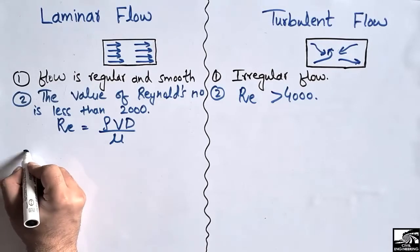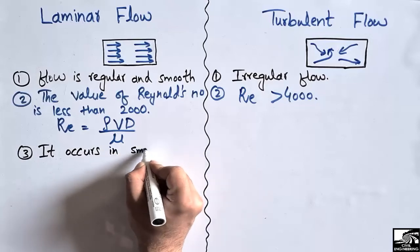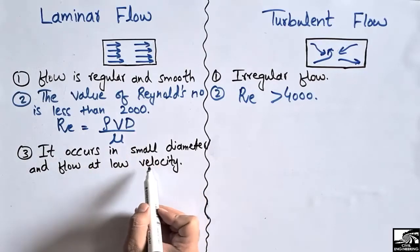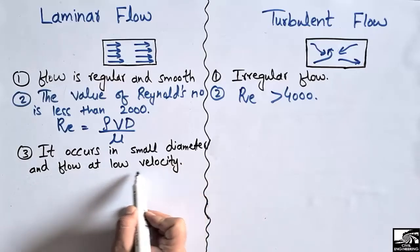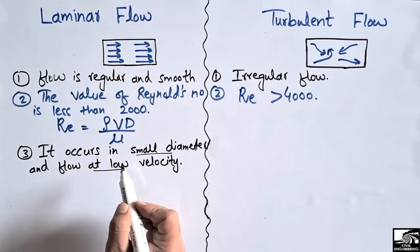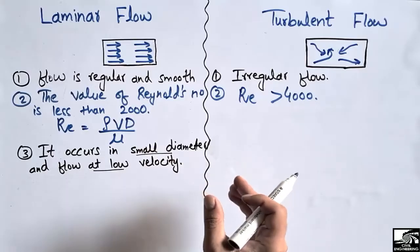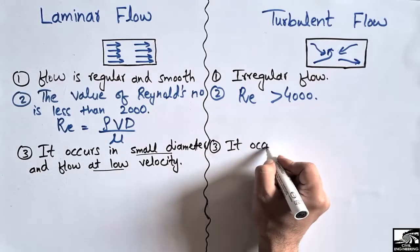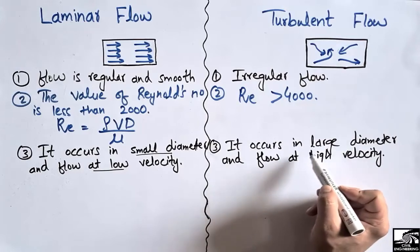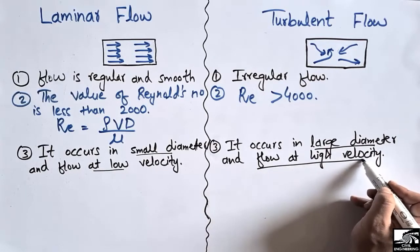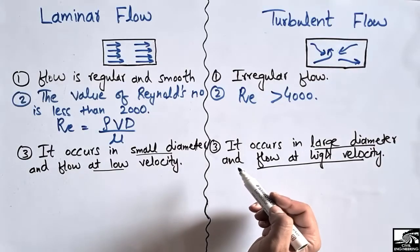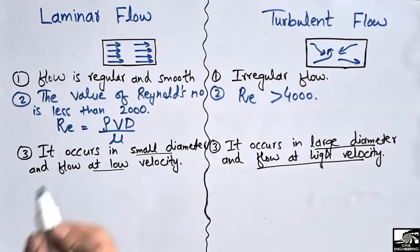The third characteristic is that laminar flow occurs in smaller diameter pipes and at low velocity. For turbulent flow, it mostly occurs in larger diameter pipes and flows at high velocity, resulting in more disturbance. When we have more disturbance in our flow, we call it turbulent flow.